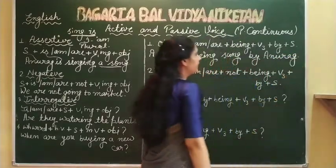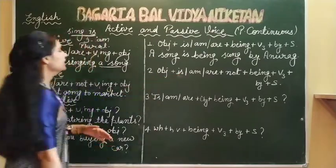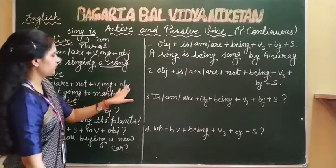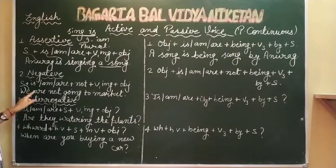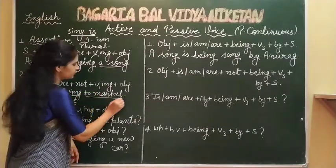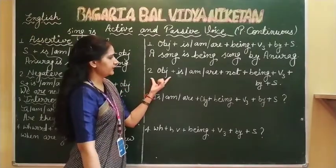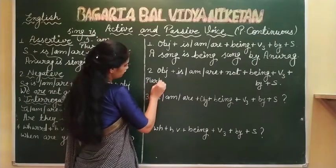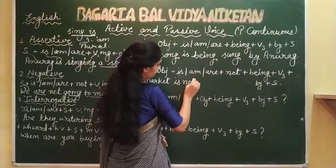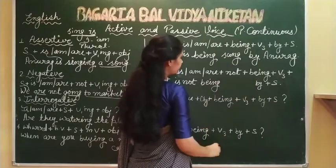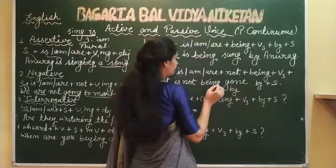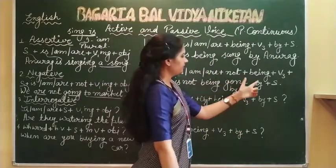Second is our negative sentence. Formula: subject plus is/am/are plus not, plus verb first form -ing, and then object. After categorization - this is our subject, this is our helping verb, 'not' shows our negativity, 'going' is our main verb first form -ing, and 'to market' is our object. Now I have to put object first, so I wrote 'market'. Market. Then 'is'. After that 'being' as it is. After that verb ki third form -ing. Going - go, went, gone. 'By' as it is. 'We' will become 'us'. Market is not being gone by us - meaning we are not going to market.